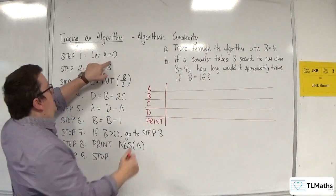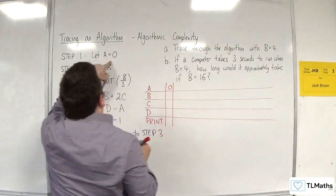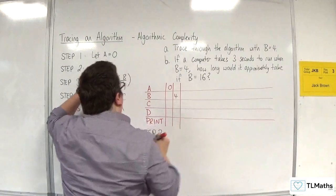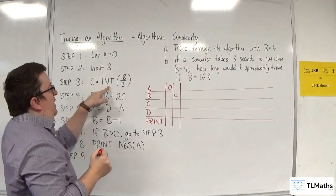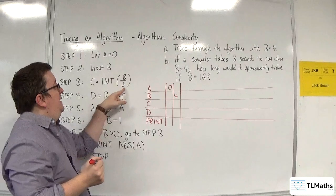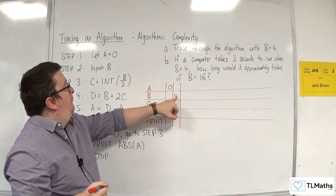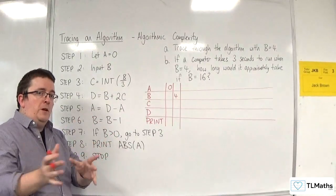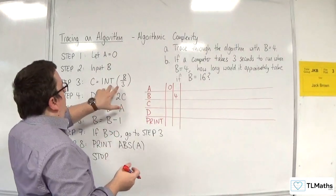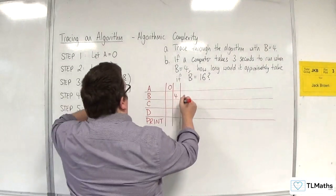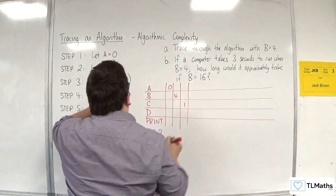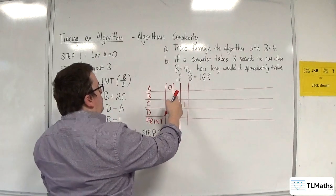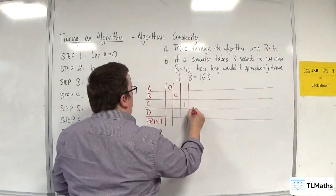First of all, let a be equal to 0. Then input b, b is 4. C is the integer part of b divided by 3. So, we've got 4 divided by 3, which is going to be 1.3 recurring. But you ignore the 0.3 recurring, you just have the 1. So that's the integer part. That means c is 1. D is b plus 2c. So, 4 plus 2 lots of 1, so that'd be 6.